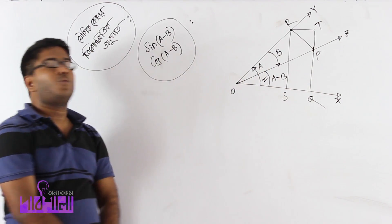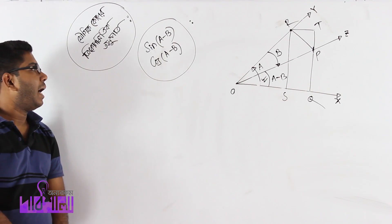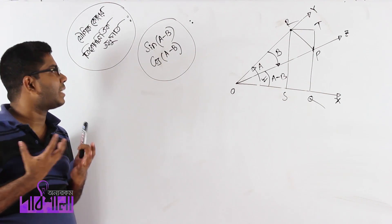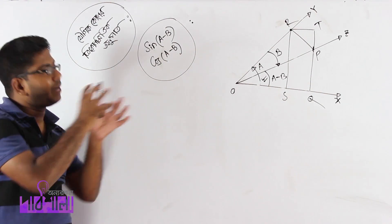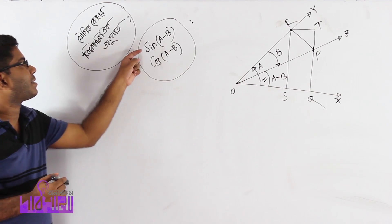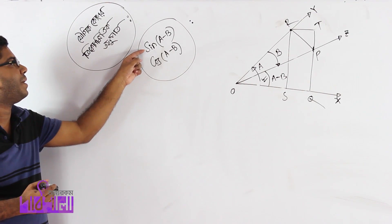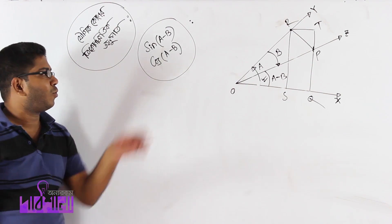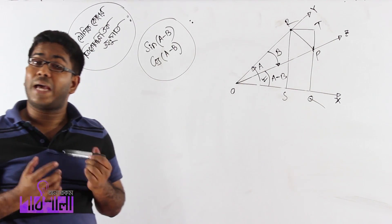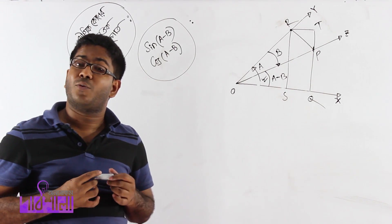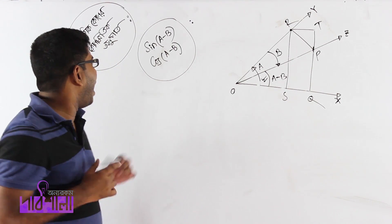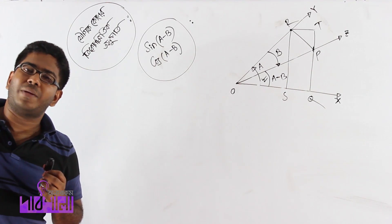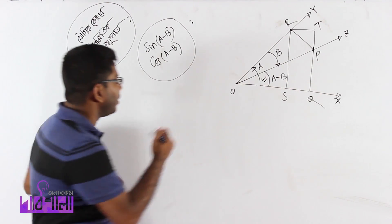These triangles are adjacent. Using the same approach as before, where we brought x close, if x and z are close — touching — we can proceed to derive the formulas for sin(a minus b) and cos(a minus b) following the same method.